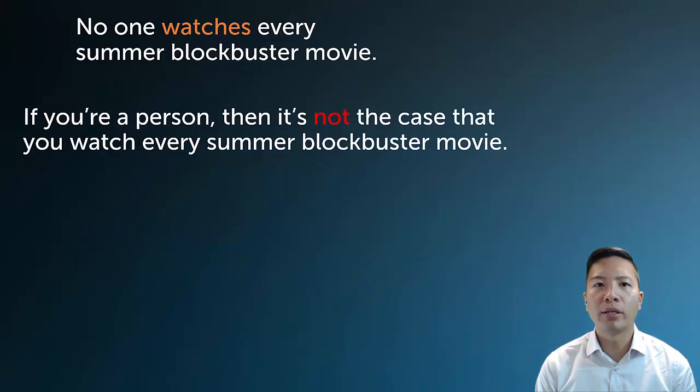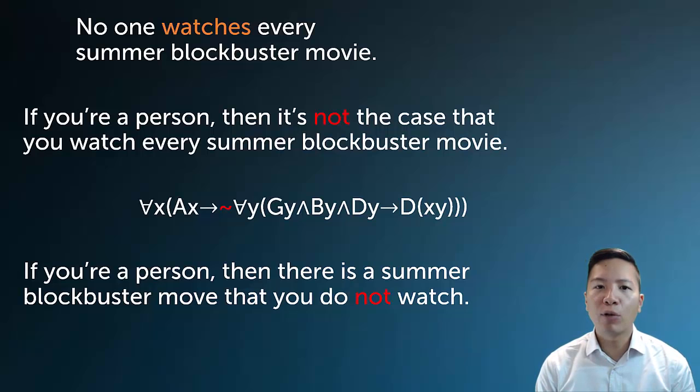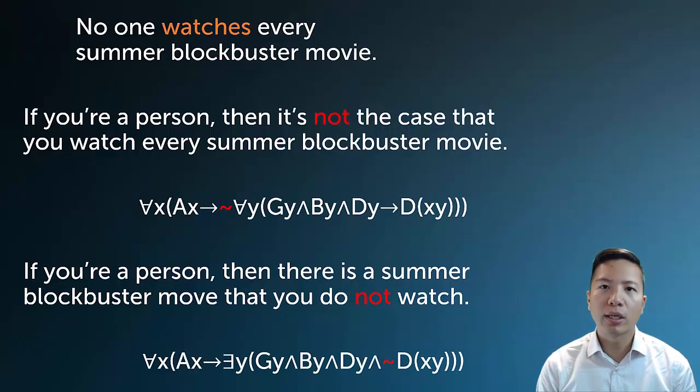Now there are other ways to symbolize no one watches every summer blockbuster movie, and it depends on how you would paraphrase a sentence. You might paraphrase it saying if you're a person, then it's not the case that you watch every summer blockbuster movie. And then you would get a symbolization like this where you move the negation inside. And this is actually just a variant on quantifier negation that we've seen in the past. And you could even move that quantifier negation one more and say if you're a person, then there is a summer blockbuster movie that you do not watch. And what would that look like? Well, it looks like this. Again though, based off of your paraphrase, you would symbolize it differently, but still remember, you want to try and capture the ultimate final predicate, which in this case is DXY.